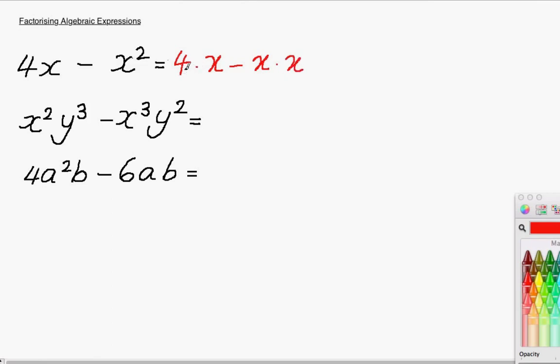Now what you can do is have a look at these expressions and figure out what is the same in this expression and what is the same in this expression. Then you can pull that out to the front. As you can see, in both of these expressions there is an x and an x. So what I'm going to do here is imagine I'm dividing this by x and dividing this by x. So I'm pulling out the x to the front of this expression.